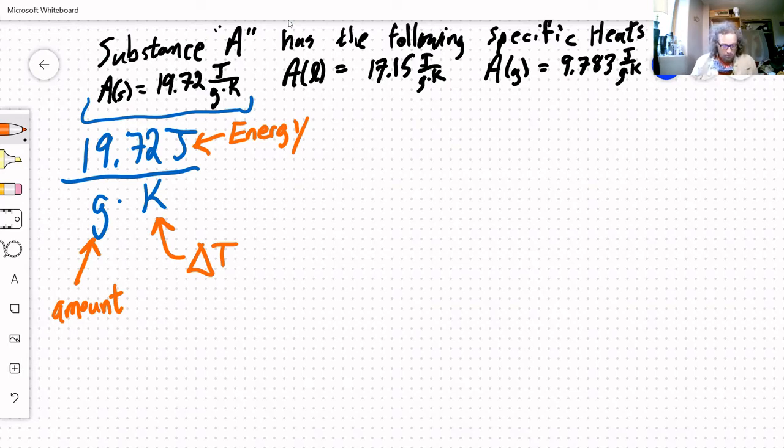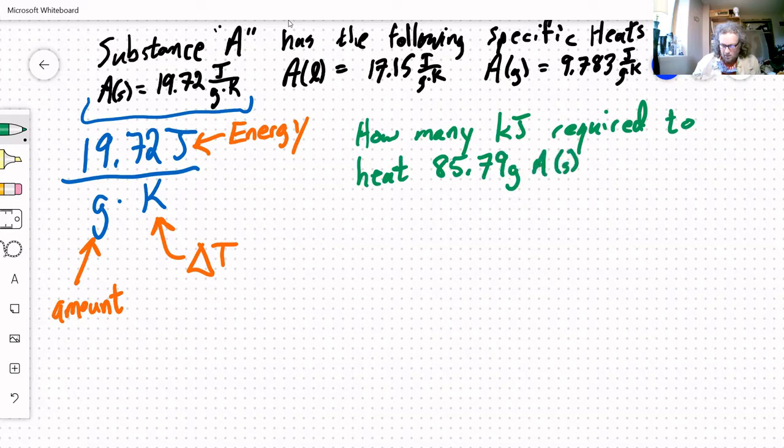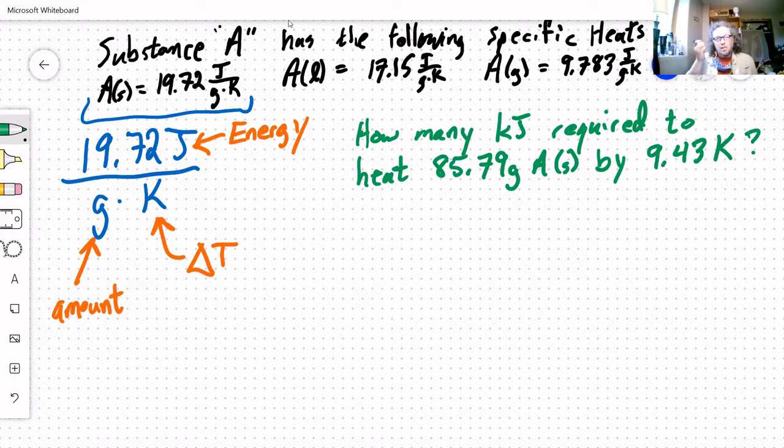So let's take a quick look at a problem. How many kilojoules required to heat 85.79 grams of a solid by 9.43 Kelvin. That's a pretty basic problem. So again, let's think about what we've got. Let's think about the process and the value that we're giving. Think about how I'm working through this problem, because it'll make things a lot easier than if you just stick with a formula and then anything changes.